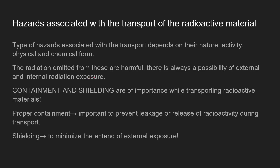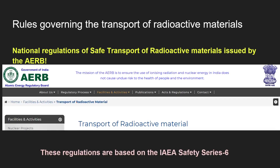The possible hazards of transporting radioactive material depend on the nature, activity, and physical and chemical form of the radionuclides. The radiation emitted is harmful, and there is always a possibility of external and internal radiation exposure. For this reason, emphasis is placed on two parameters: containment — to prevent leakage or release of radioactivity during transport — and shielding, to minimize external exposure.